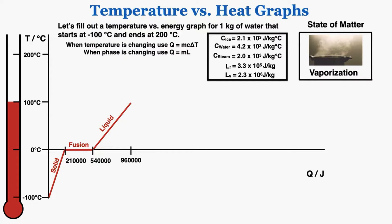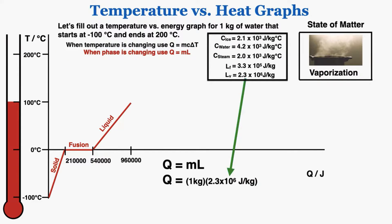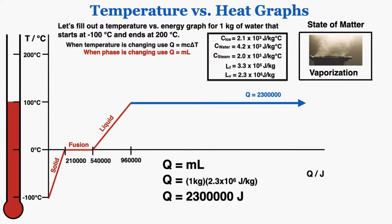When the water hits 100 degrees Celsius, the additional heat goes into changing phase because now it's at its vaporization point. Using Q = mL, where L is the latent heat of vaporization — a very large number — gives 2,300,000 joules, which is much bigger than the other values used so far. Adding that to what we already had gives 3,260,000 joules, and throughout that entire phase change the temperature is not changing at all.